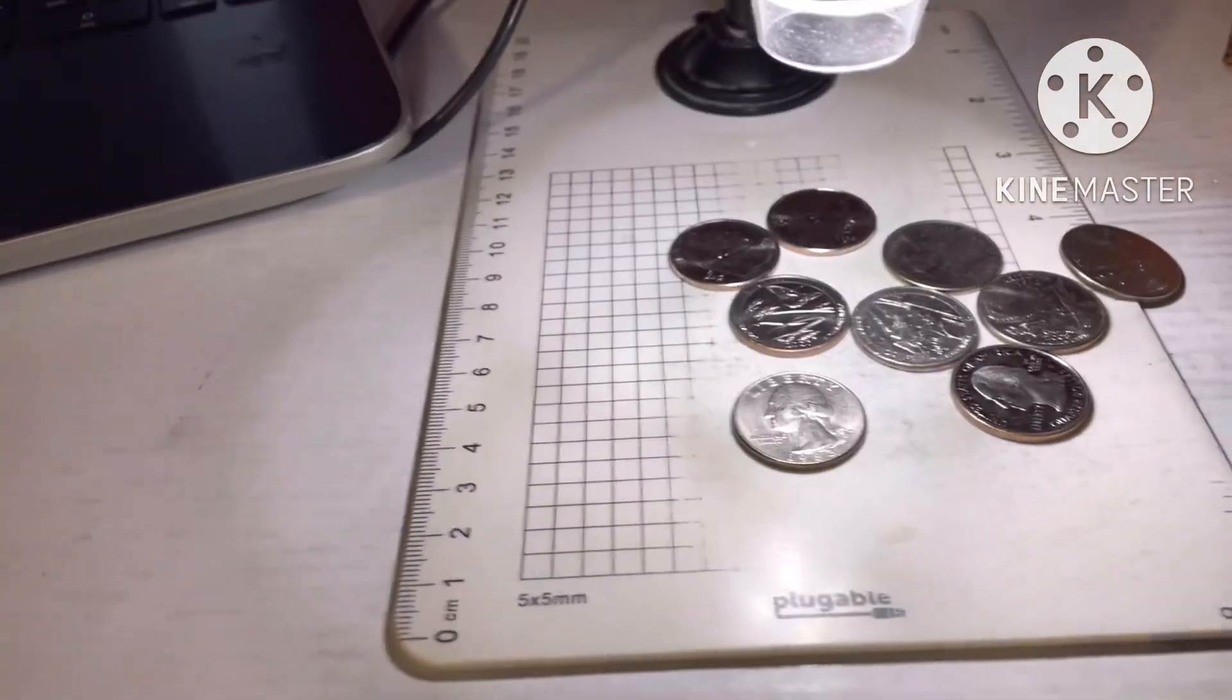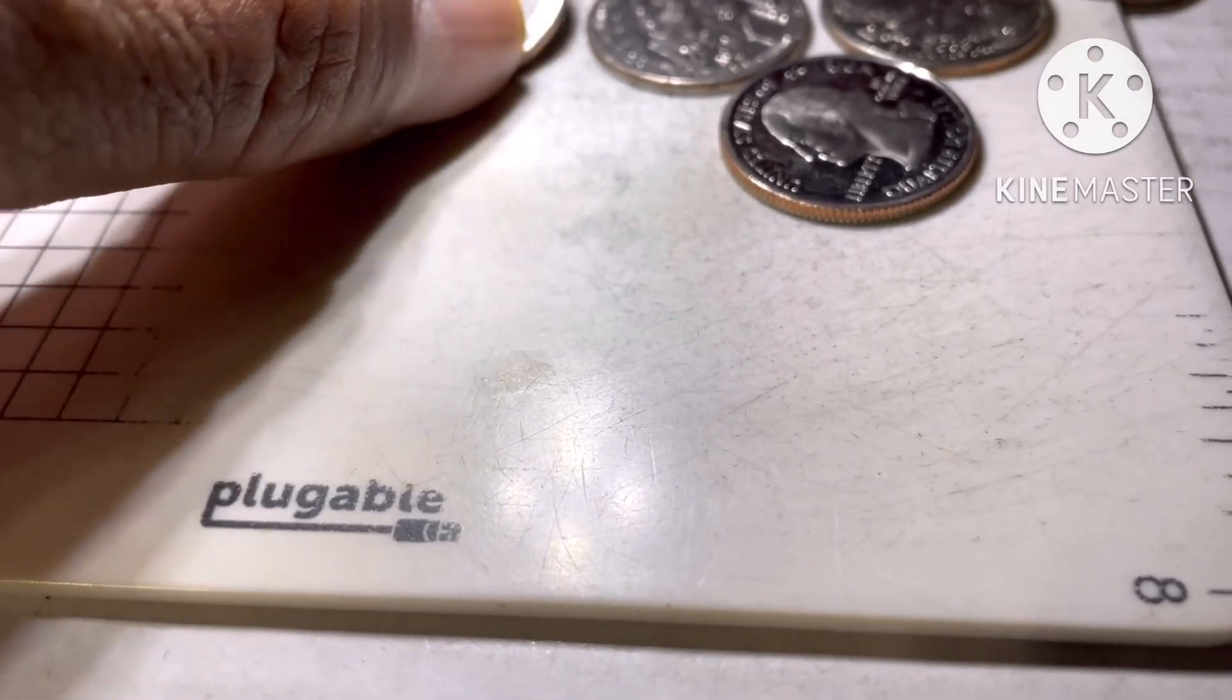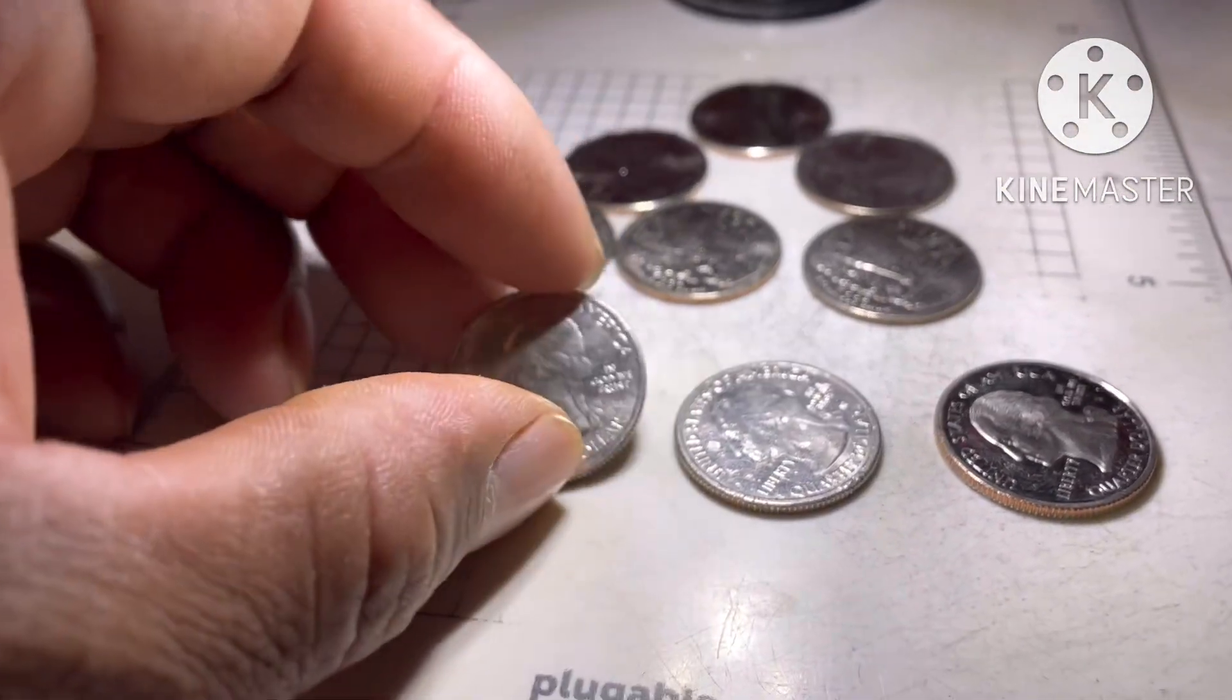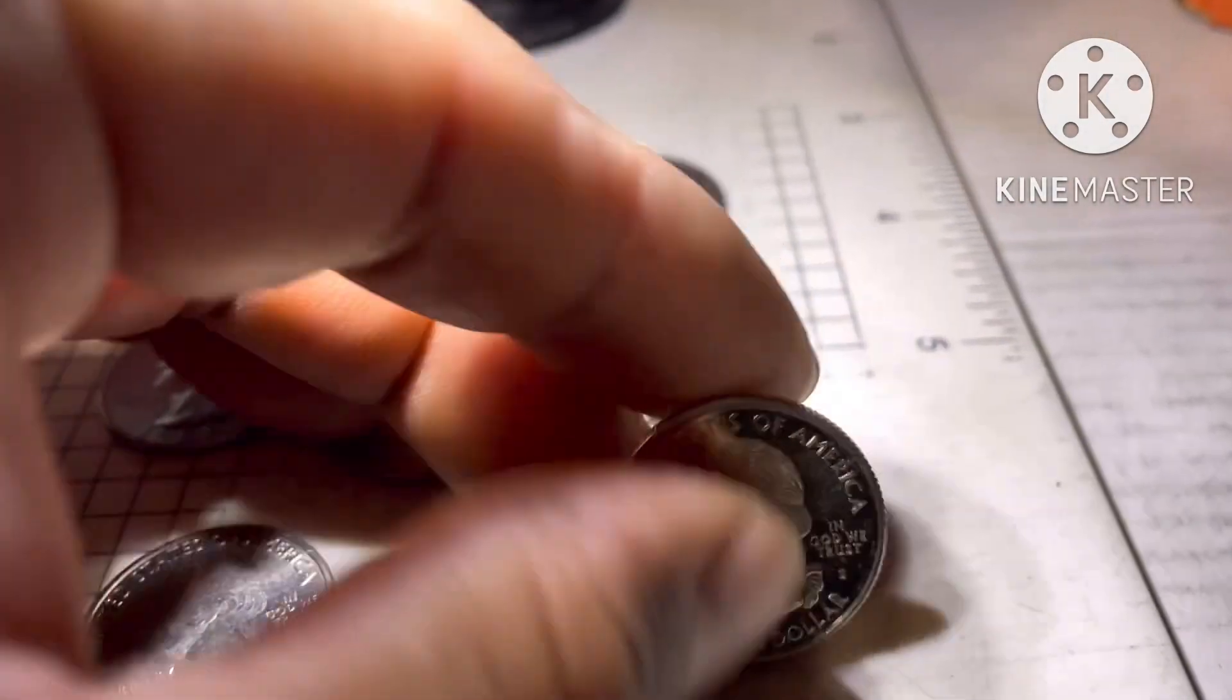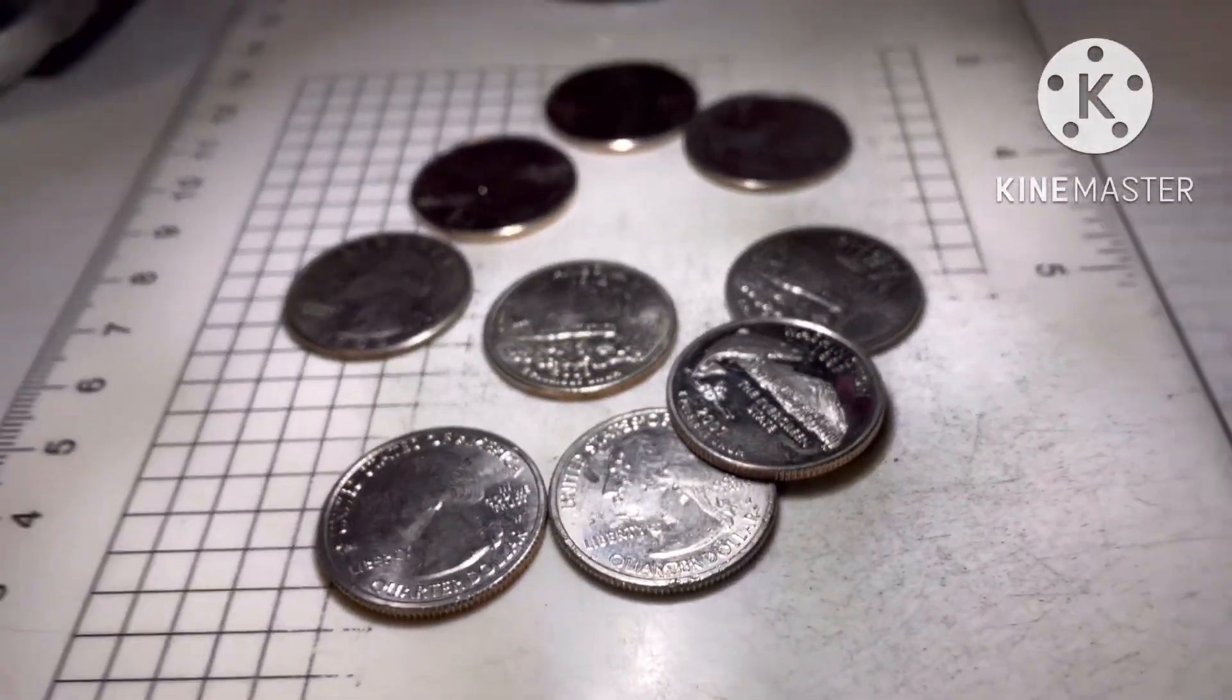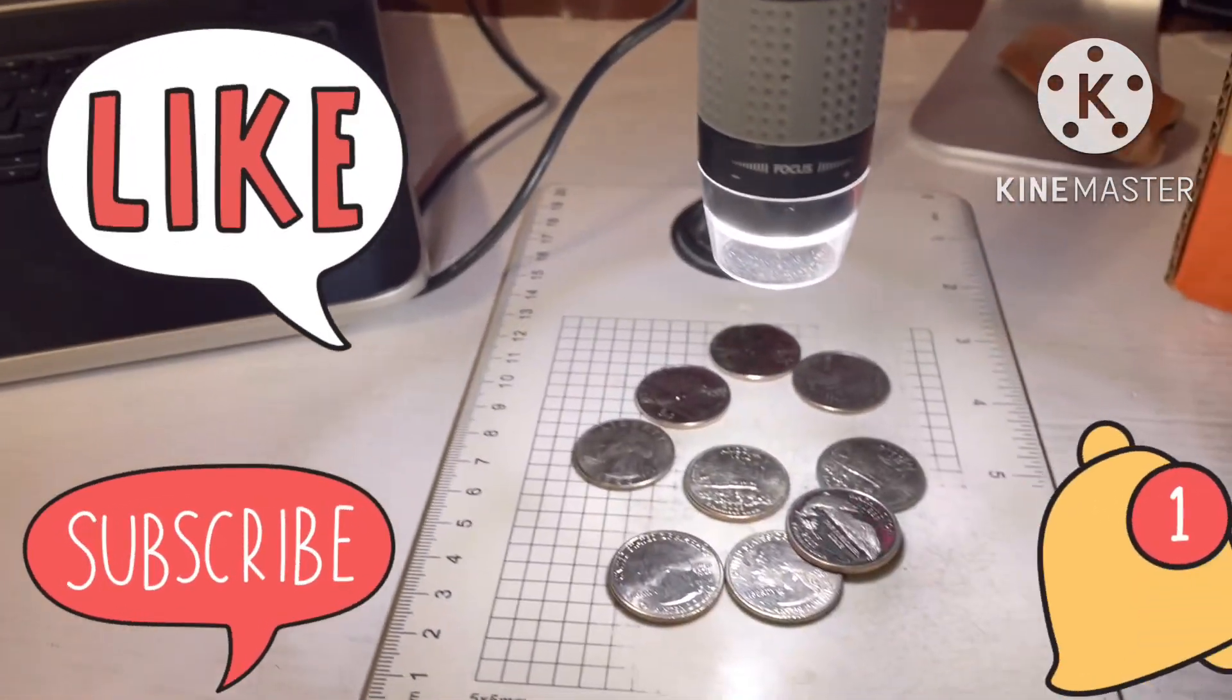All right guys, this is it. Two boxes and two days. That's not too bad. At least I didn't get a skunk. That's two West Points. I know this is in bad, bad, bad shape, but a proof. This proof is in real nice condition. All right guys, thank you for watching and see you on the next one. Good luck on your hunt. Please like and subscribe.